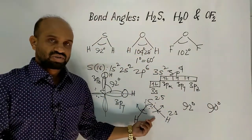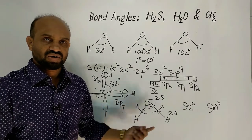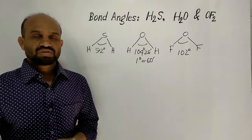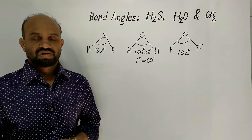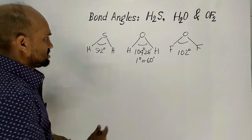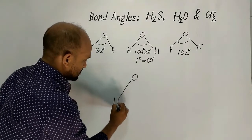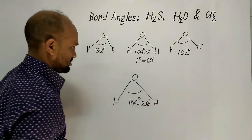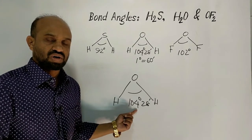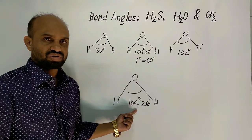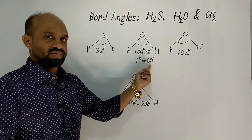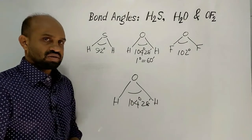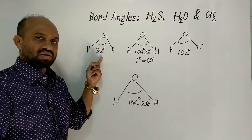Now let's compare the degree of bond angle in hydrogen sulfide with the bond angle in water. In water, the bond angle is 104 degrees 28 minutes, which is close to 104.5 degrees. The bond angle of water is bigger than the angle in hydrogen sulfide.